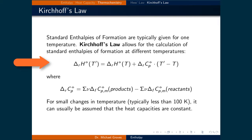The change in standard heat of reaction at a new temperature T prime is equal to the change in standard heat of a reaction at a known temperature T, plus the change in the standard heat capacity at constant pressure for the reaction times the difference in temperature. The change in standard heat capacity at constant pressure for the reaction is equal to the weighted sum of the standard molar heat capacities at constant pressure of the products minus the weighted sum of the standard molar heat capacity at constant pressure for the reactants.